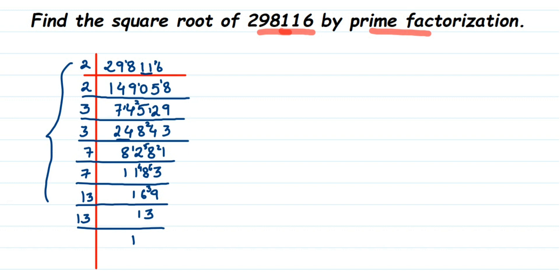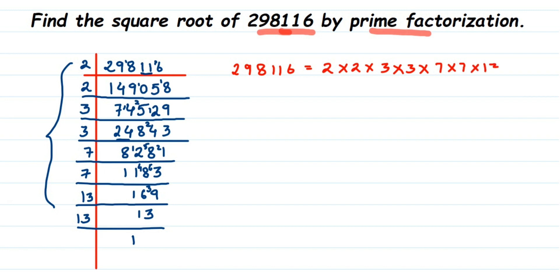Let's rewrite this: 298116 = 2 × 2 × 3 × 3 × 7 × 7 × 13 × 13. If a number is a perfect square, all prime factors will always appear in pairs. We can see that 2 is in a pair, 3 is in a pair, 7 is in a pair, and 13 is in a pair.